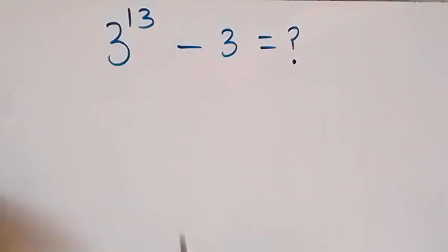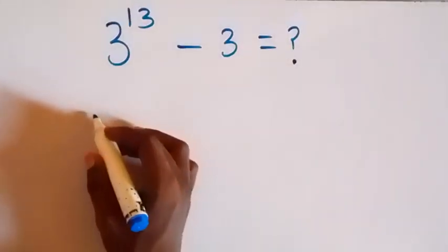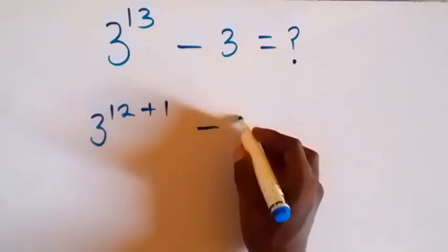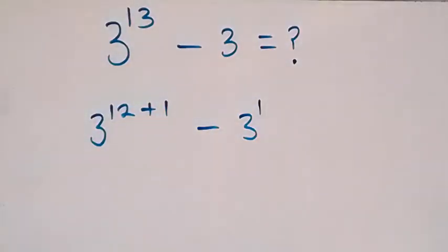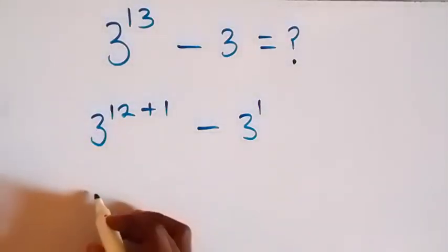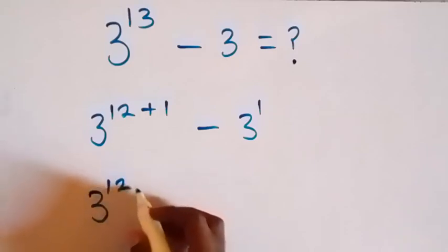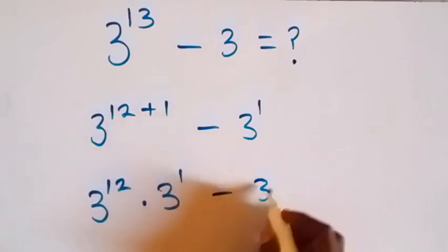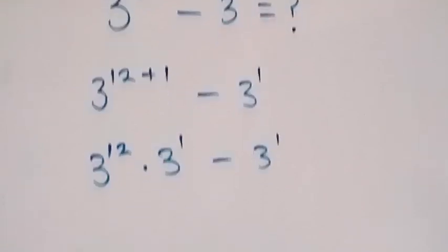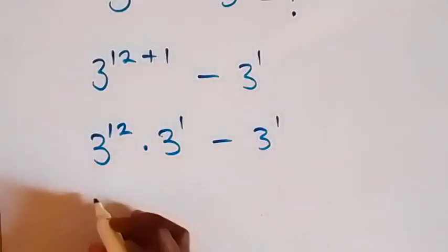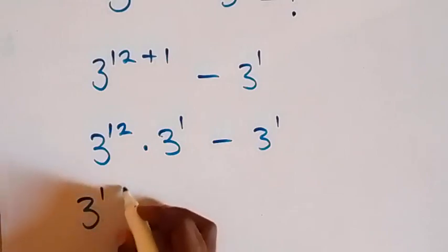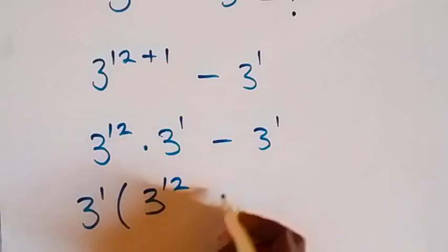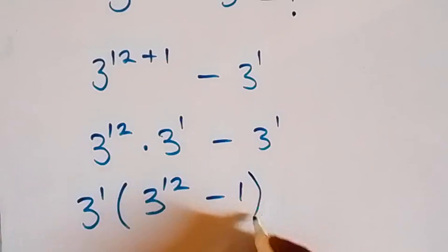From here we can write 3 raised to power 13 as 3 raised to power 12 plus 1, minus 3 raised to power 1. Separating this using the law of indices, this is 3 raised to power 12 times 3 raised to power 1, then minus 3 raised to power 1. We have 3 raised to power 1 common, so let's factor it out.